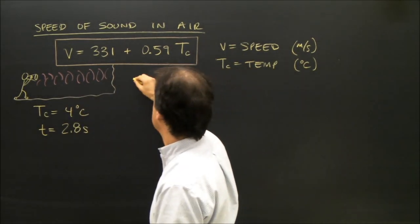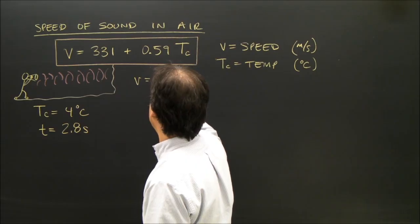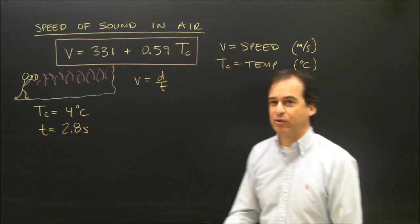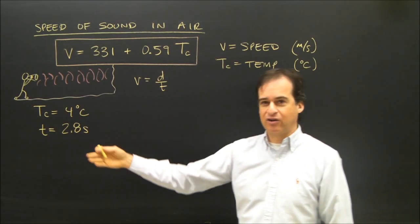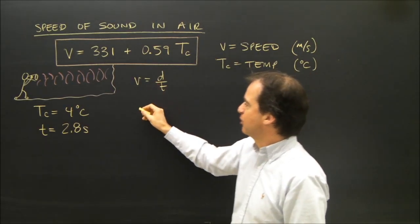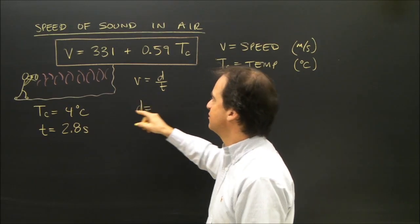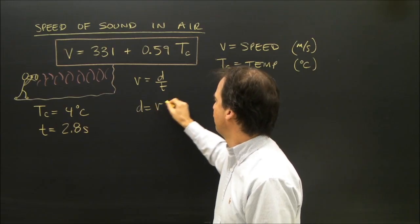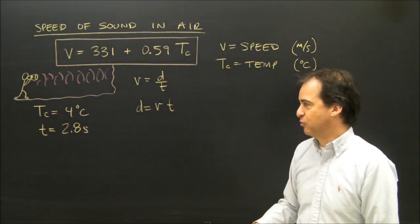Well if I wonder how far it is, I'm going to use V is D over T, our kinematics equation for uniform motion, because the sound waves travel at a constant speed. So if I rearrange that, I've got the distance that the waves travelled is how fast the waves were travelling times how long they were travelling for.